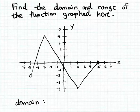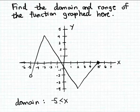The domain includes all numbers between minus 5 and 5. Any of these numbers used as input will give a real number matching output value. So we can write the domain as an inequality: x is greater than minus 5 but less than or equal to positive 5. We don't say x is greater than or equal to minus 5 because minus 5 is not included, but we do include positive 5, so x is less than or equal to 5.